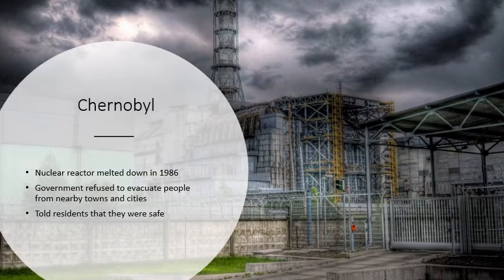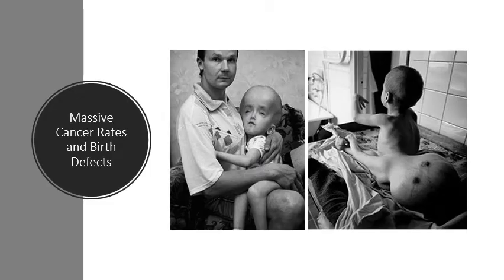One disaster that symbolizes the nature of the Soviet Union — and would eventually help bring it down — was the accident at Chernobyl. This was the nuclear reactor that melted down in 1986. The government refused to evacuate people from nearby towns and cities and told residents they were safe. There's a nuclear reactor in Chernobyl that melts down, releasing radiation all over the area. The government said, 'No, everything's fine, we've got it under control, you're safe, stay where you are.' And obviously they did not have it under control.